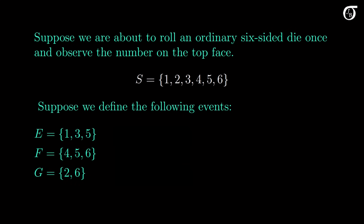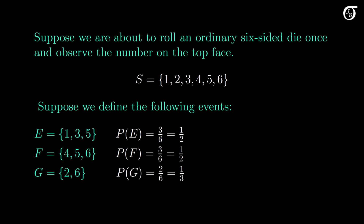Suppose we define the following events: E is the odd numbers, F is the values greater than 3, and G is made up of the numbers 2 and 6. Since the outcomes are equally likely, the probability of E is 3 over 6, or one-half; the probability of F is also 3 over 6, or one-half; and the probability of G is 2 over 6, or one-third.